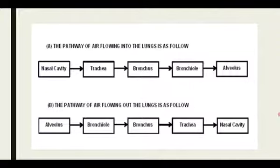In the alveoli, the carboxyhemoglobin breaks into hemoglobin and carbon dioxide. The hemoglobin remains in the alveoli, and the carbon dioxide is now in gaseous form. When the diaphragm moves upward, this carbon dioxide travels from bronchioles to bronchus, bronchus to trachea, trachea to the nasal cavity, and from the nasal cavity, the carbon dioxide goes out from the body.